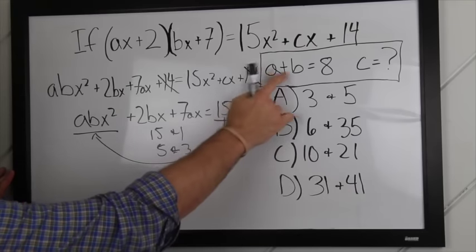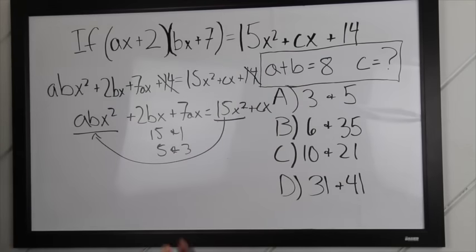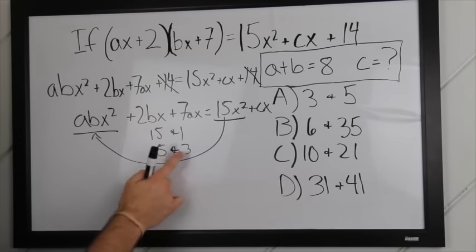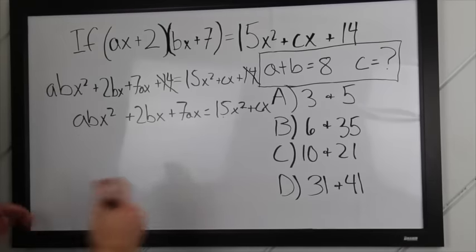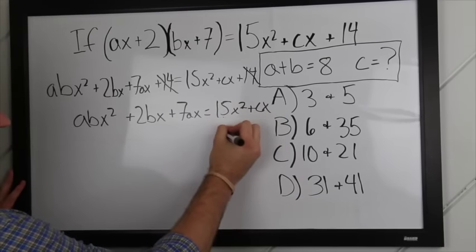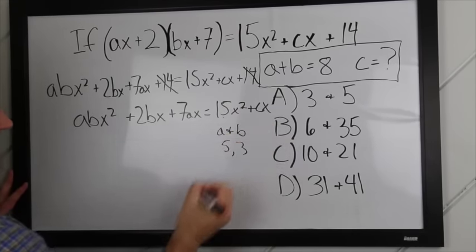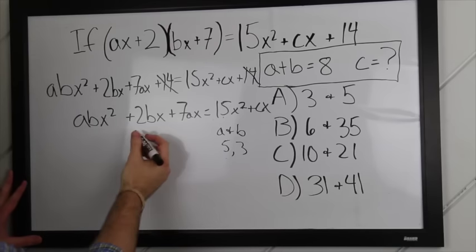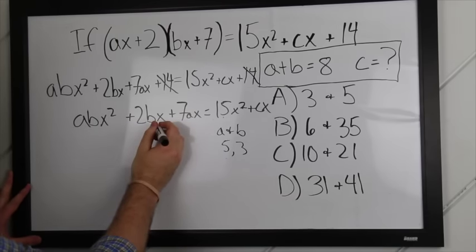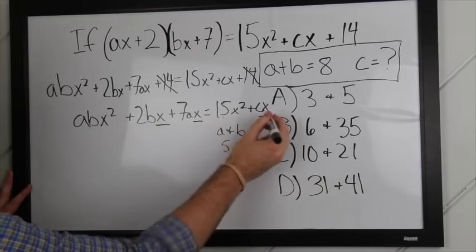But, we know that a plus b equals 8, so our a and b are going to be 5 and 3. So that we know our a and our b have to be 5 and 3, or 3 and 5. And, the other terms we have here are we have two x terms here and one x term here.